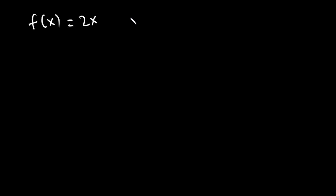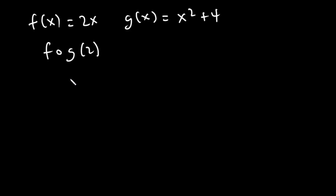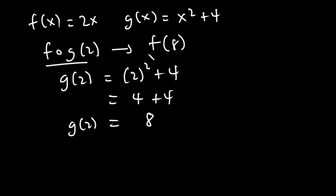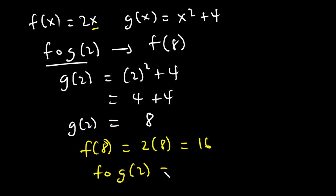Given f(x) = 2x and g(x) = x² + 4, how do we find f(g(2))? First find g(2): g(2) = 2² + 4 = 4 + 4 = 8. So g(2) = 8, and this reduces to f(8). To find f(8), replace x with 8: f(8) = 2 times 8 = 16. So f(g(2)) = 16.